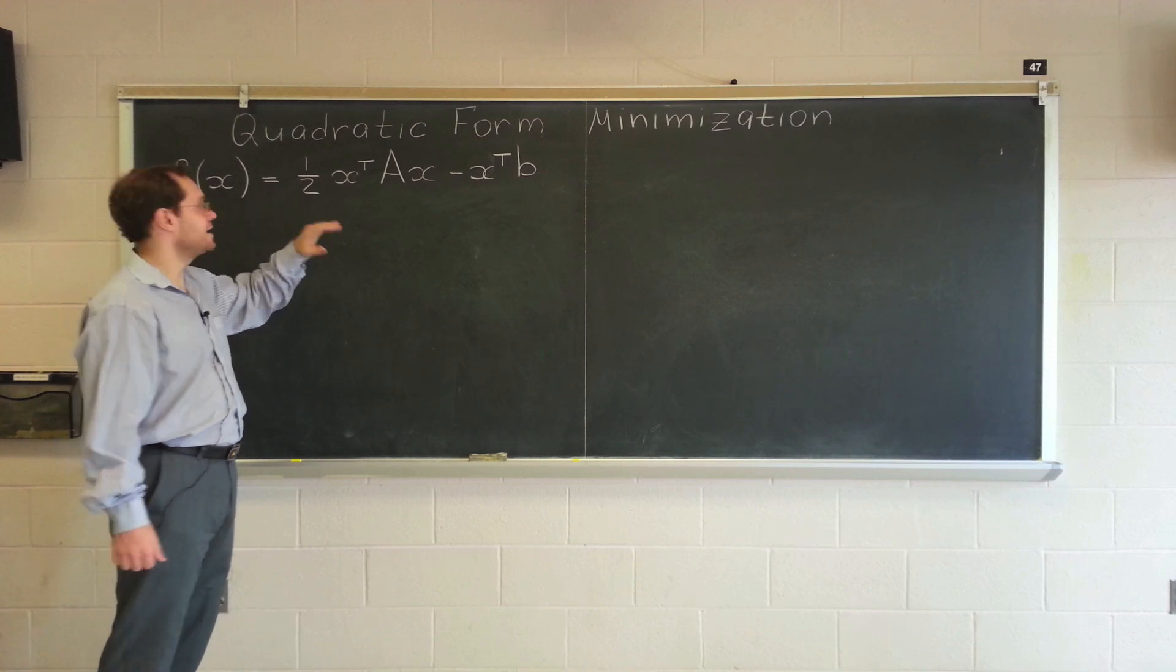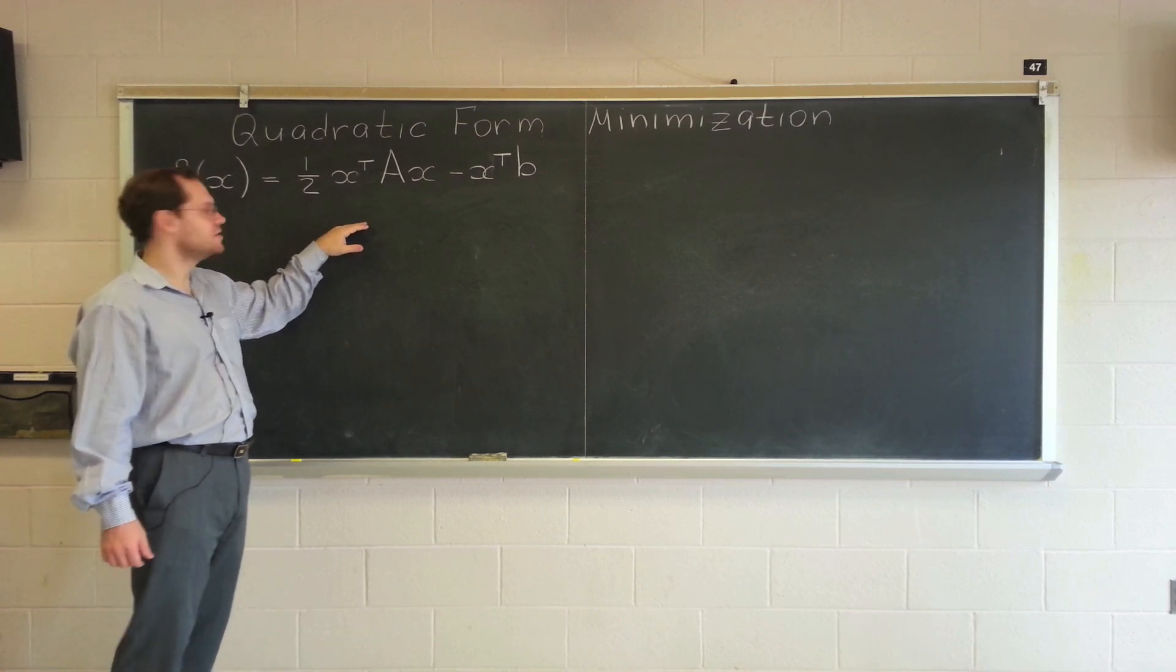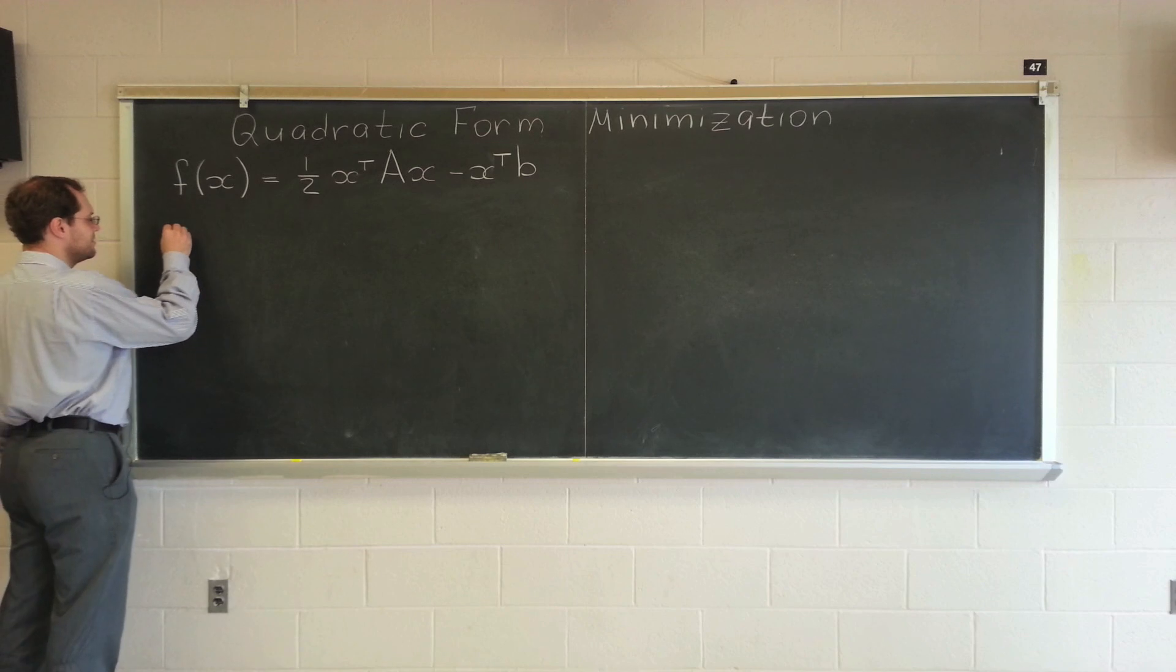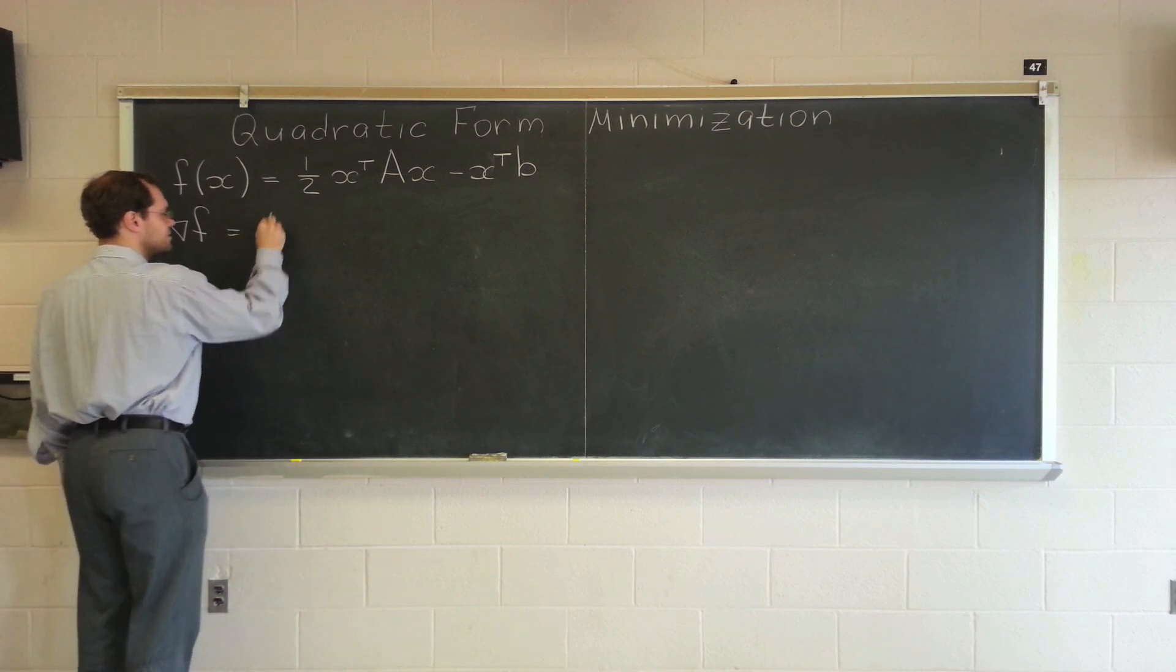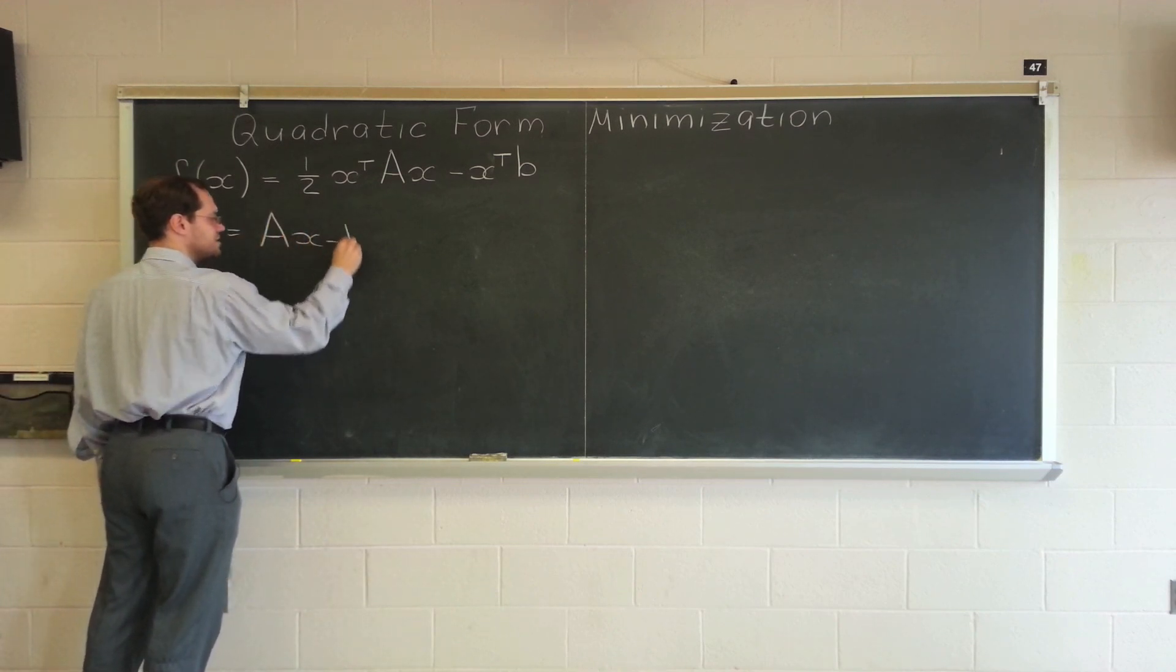Ax equals b. Ax minus b, which is what you're trying to say. So, the answer in linear algebra terms will be that the gradient of f equals Ax minus b.